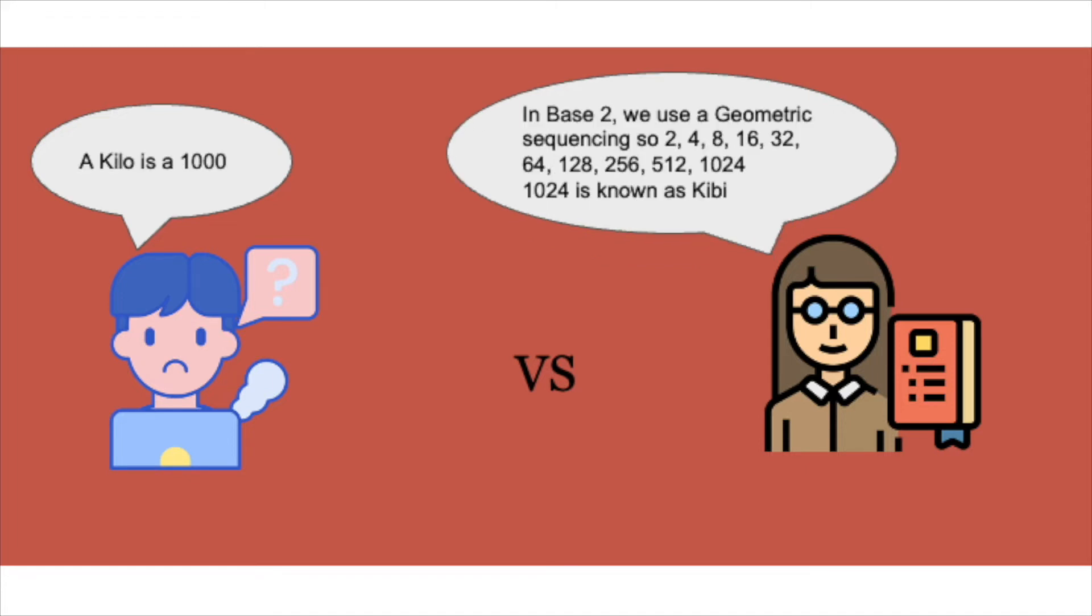So the amateur is like, okay well I think that a thousand is a kilo and that's a kilobyte. The expert goes, well in base two we use something called geometric sequencing, so we go up in 2, 4, 8, 16, 32, 64, 128, 256, and so on until we reach 1024, and that is known as a kibi, 2 to the power of 10.